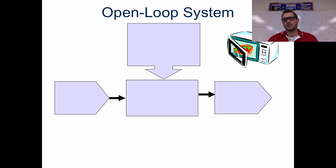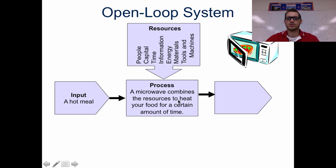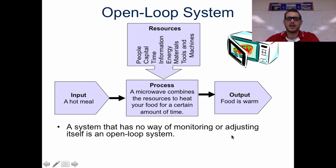Now we get to another type of system. We talked about systems originally — inputs and outputs — but this is what's called an open loop system. Using a microwave as the example: a microwave combines the resources to heat your food for a certain amount of time. The inputs include tools and machines, energy, information, time, and raw materials — mostly in the food. The output is, obviously, lunch. It is a system that has no way of monitoring or adjusting itself. This is called an open loop system.